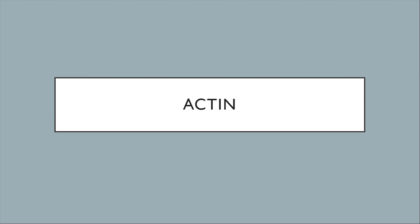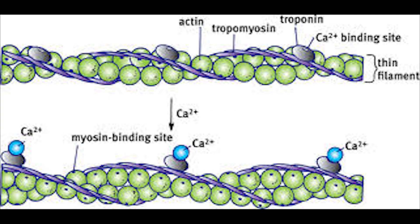Now let's move on to actin molecules. The actin molecules are composed of F-actin, which is composed of G-actin complexes. Each G-actin has ADP binding sites to which the myosin heads can be attached.